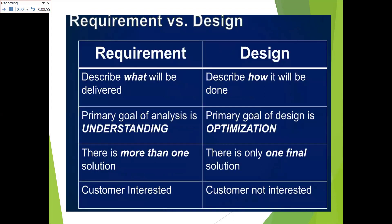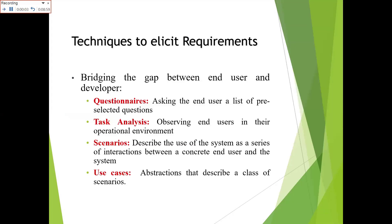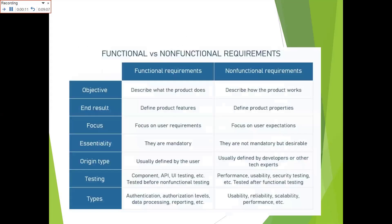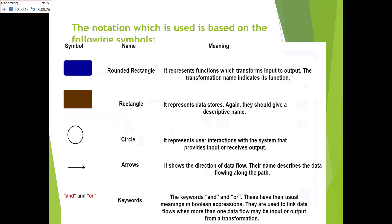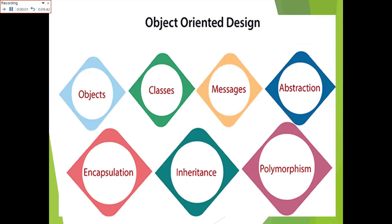This is the general idea of requirements and design. The techniques of eliciting requirements include questionnaire, task analysis, scenario, and use cases. There are many criteria such as objective, end result, purpose, essentially, origin type, and testing type that categorize functional and non-functional requirements. Various notations are based on symbols like rounded rectangle, rectangle, circle, arrows, and keywords, each having different meanings. In object-oriented design, we follow concepts like object classes, abstraction, encapsulation, inheritance, and polymorphism.